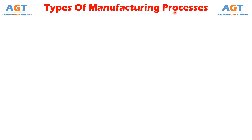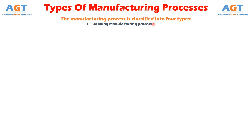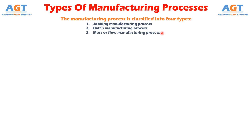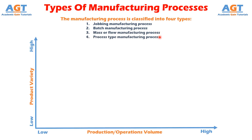The manufacturing process is classified into four types: Number 1, Jobbing Manufacturing Process. Number 2, Batch Manufacturing Process. Number 3, Mass or Flow Manufacturing Process. And Number 4, Process Type Manufacturing Process.